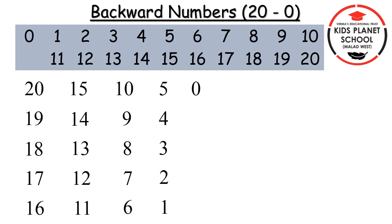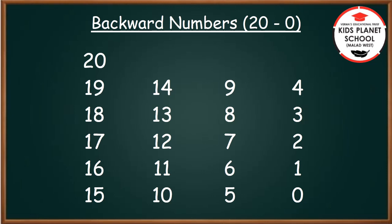So, this is how we write backward numbers from 20 to 0. Children, now let us read the backward numbers together. Backward numbers from 20 to 0. Let us start: 20, 19, 18, 17, 16, 15, 14.